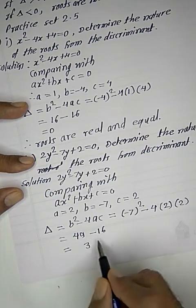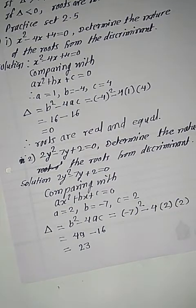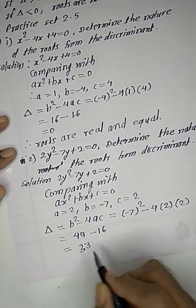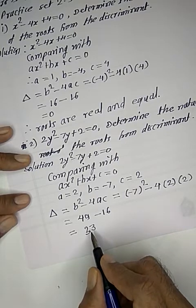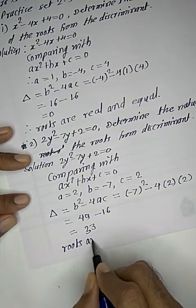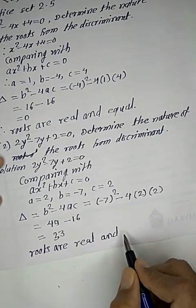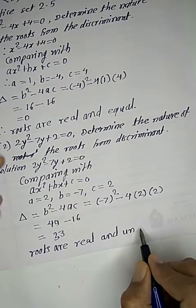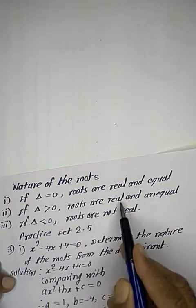Square of 7 is 49 - (4 × 2 × 2) = 49 - 16 = 33. Since delta is greater than zero or positive, roots are real and unequal.